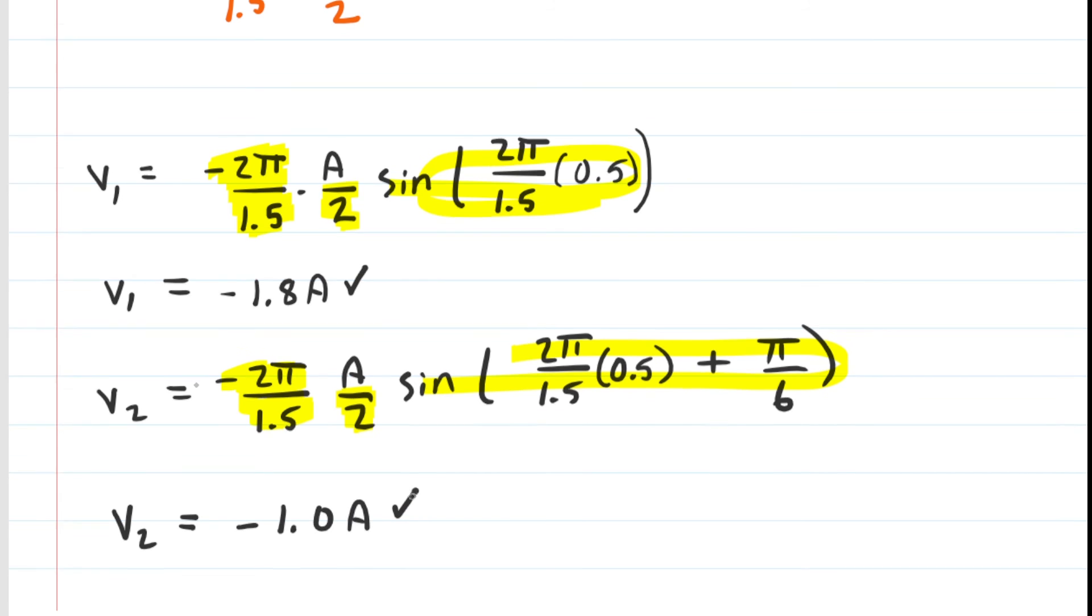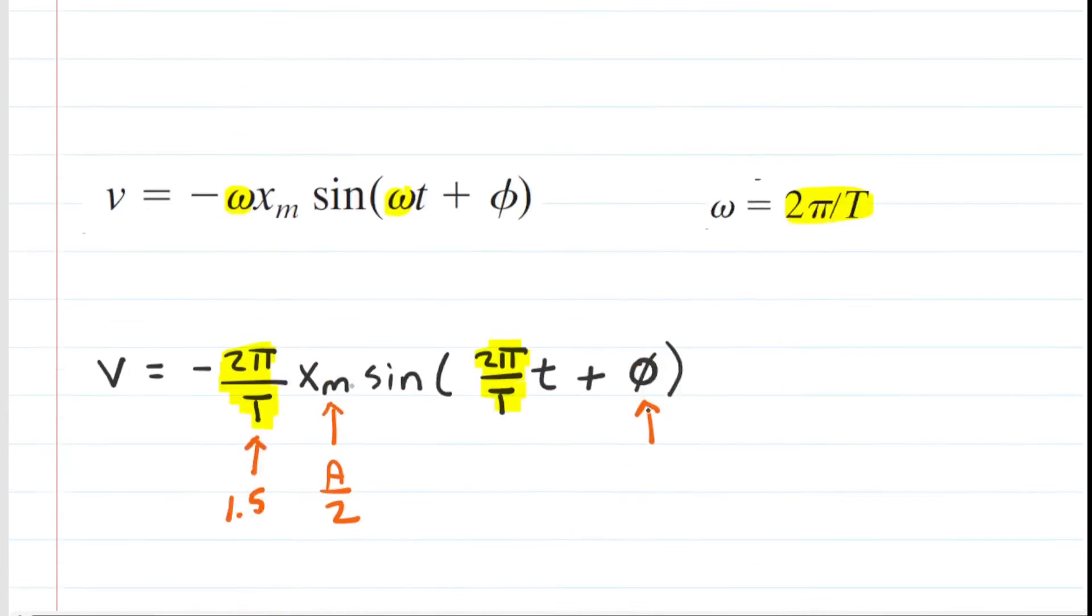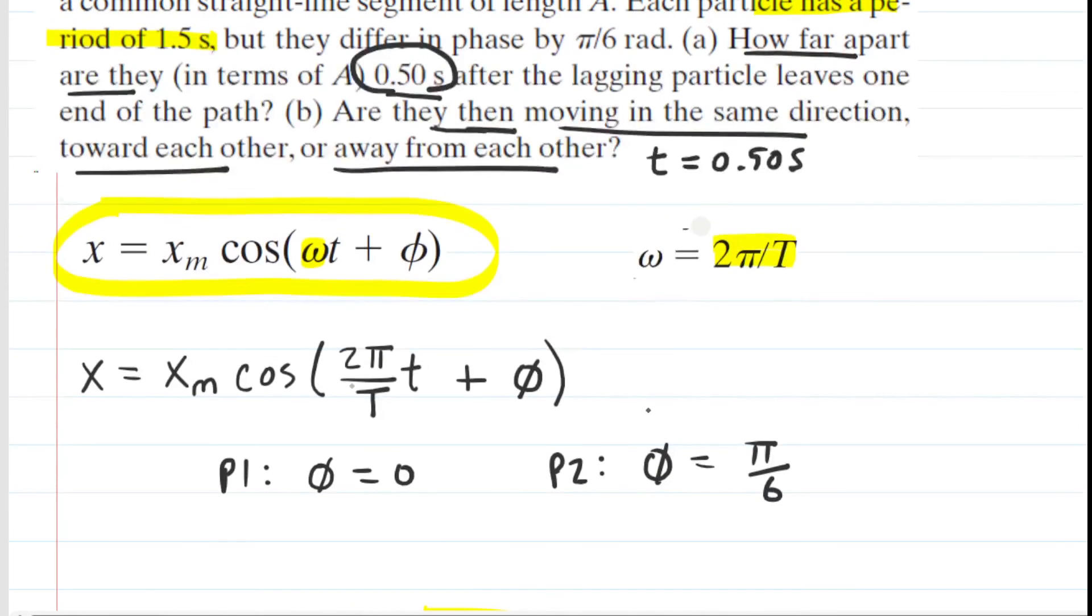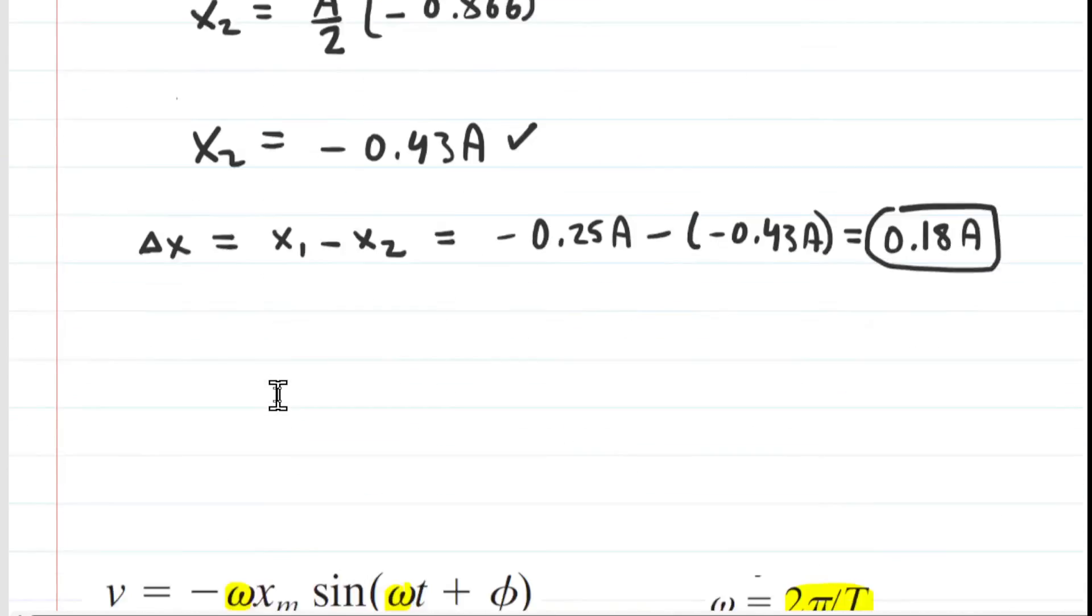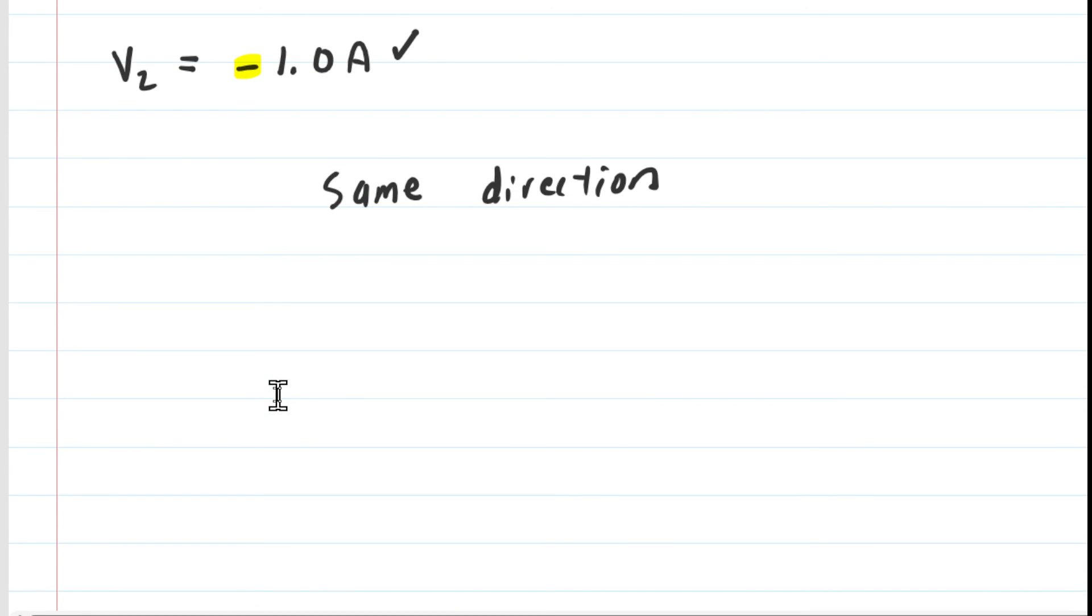Now, the thing to notice is that these two velocities are both negative valued. So that means that the particles are traveling in that negative direction. Therefore, at half of a second, they are indeed traveling in the same direction. And that's really all we have to do for part B, because remember, it just asked, are they then moving in the same direction? So, lo and behold, they are moving in the same direction. That is the correct answer to part B.